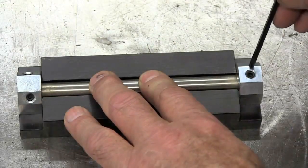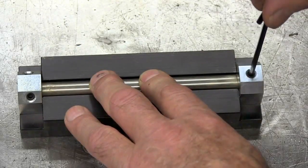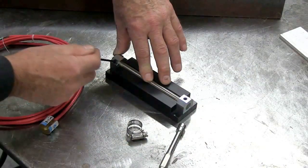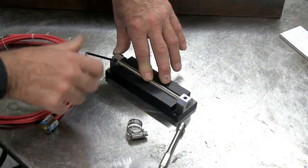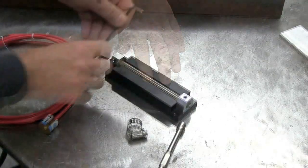It's put into this fixture here to get the correct orientation and length. Then we take this Allen key, snug the screw onto the end block, maintain this tight up against this fixture. Snug, do not tighten, just snug them up. That's it.